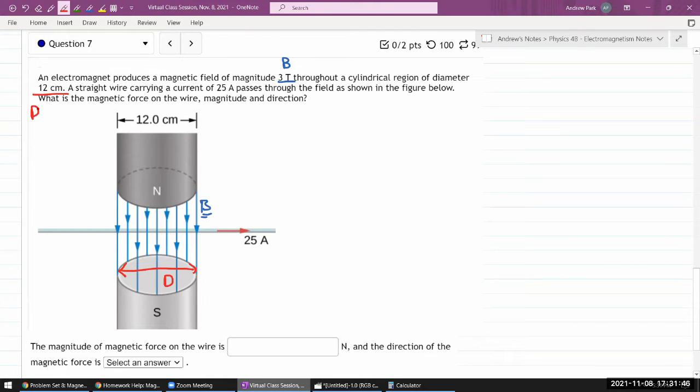So diameter D in the unit. A straight wire carrying a current of 25 amperes passes through the field as shown in the figure below. What is the magnetic force on the wire? Magnitude and direction.